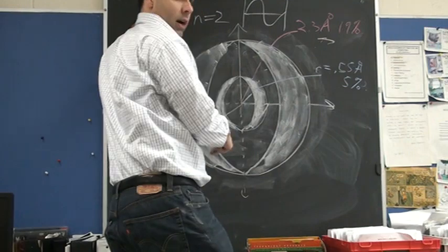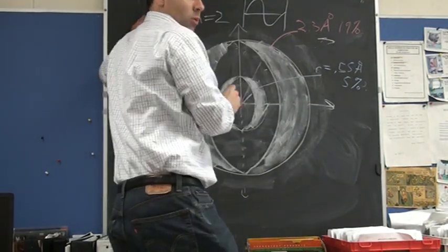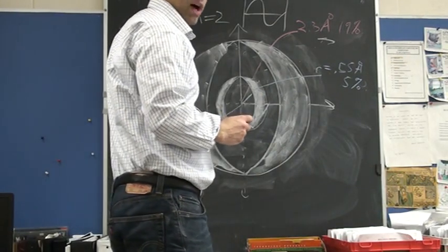So, same thing here. The two places of high probability, 2.3 angstroms away and 0.55 angstroms away. Those are the two areas of high probability. Could the electron be somewhere else?